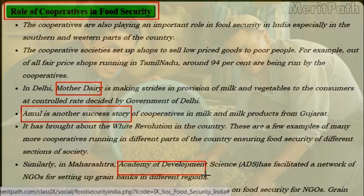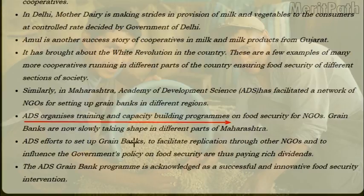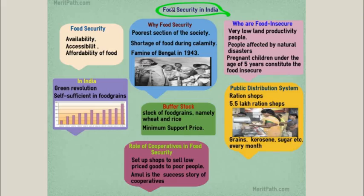In Maharashtra, the Academy of Development Science has facilitated a network of NGOs for setting up grain banks in different regions. Grain banks are now slowly taking shape across Maharashtra. ADS efforts to set up grain banks, facilitate replication through other NGOs, and influence government food security policy are paying rich dividends. The ADS Grain Bank program is now acknowledged as a successful and innovative food security intervention.